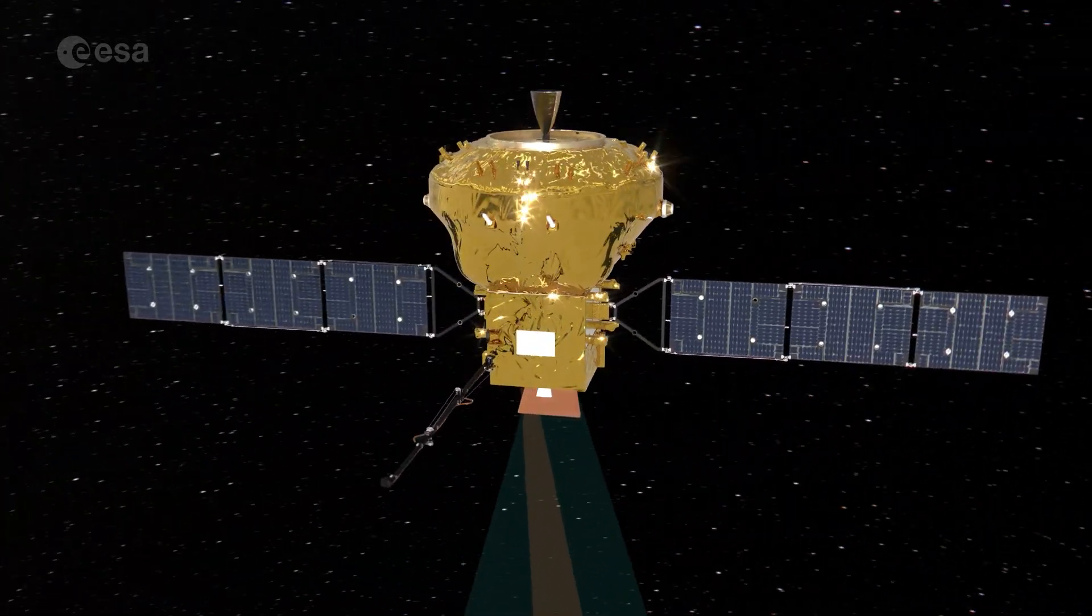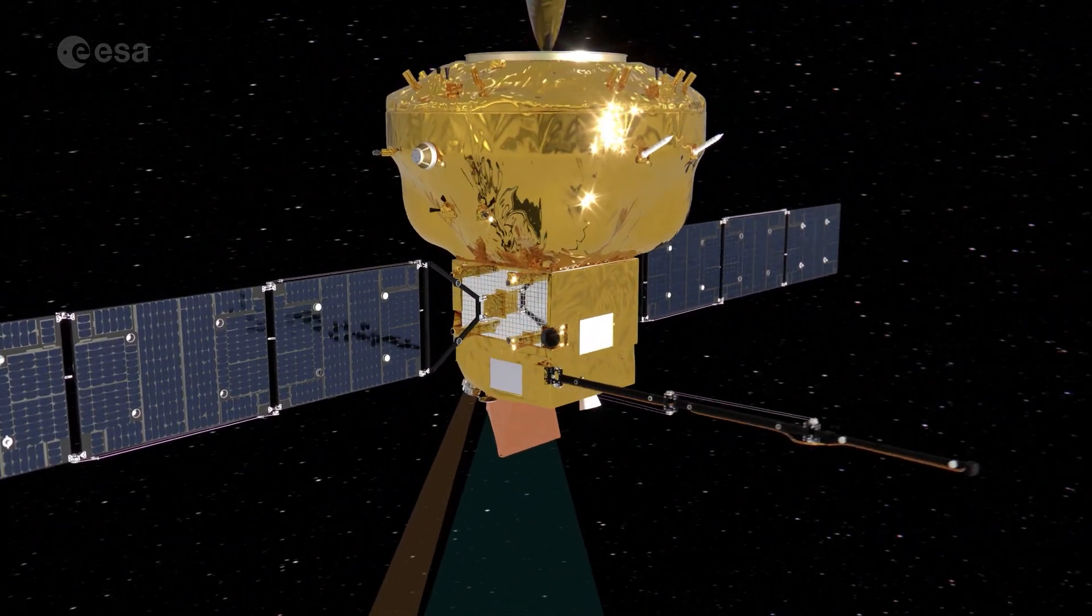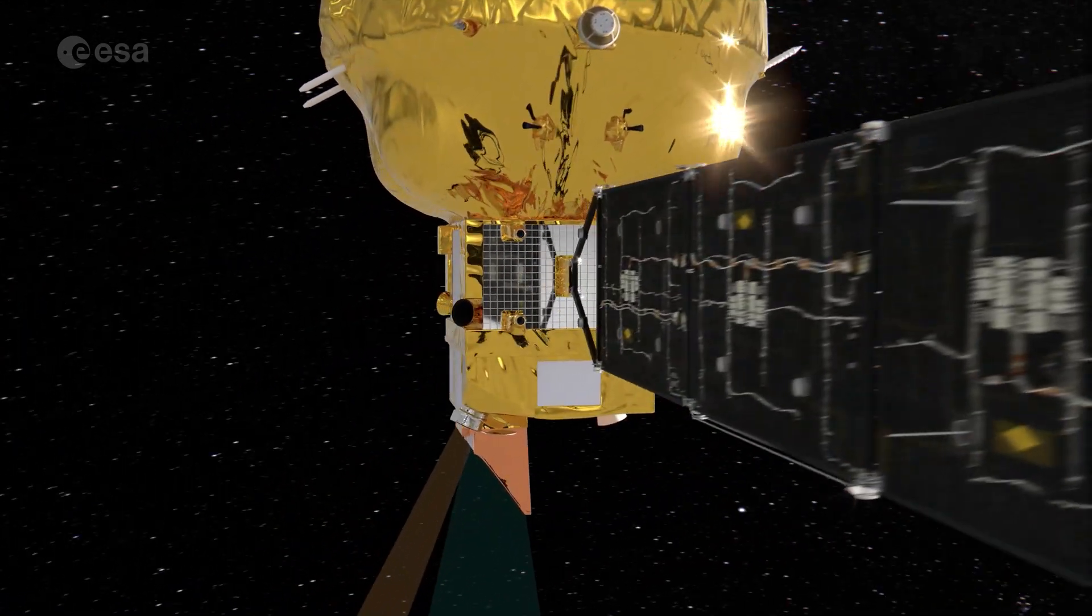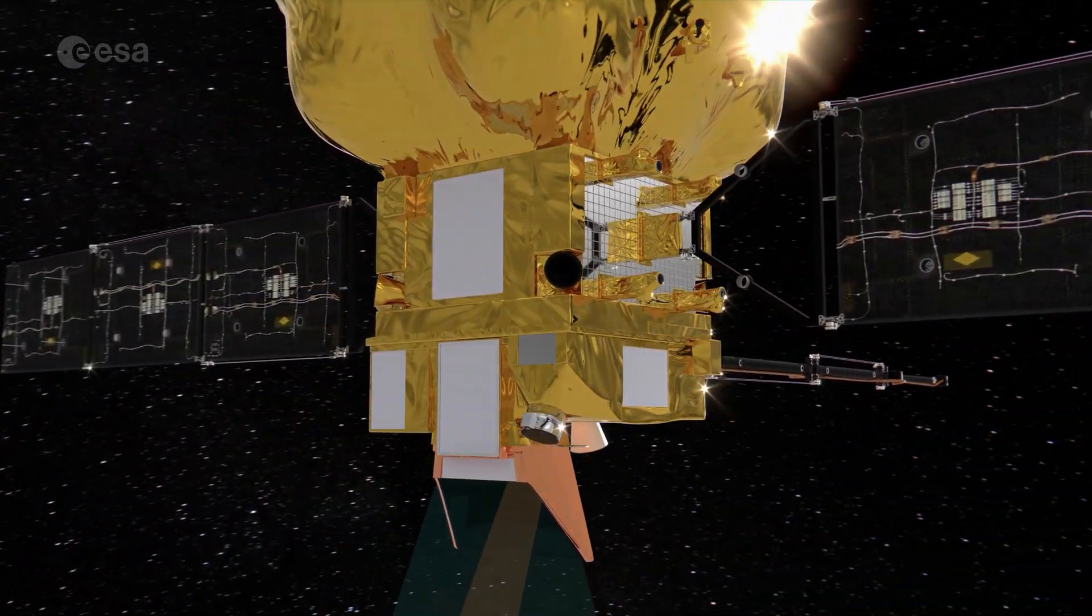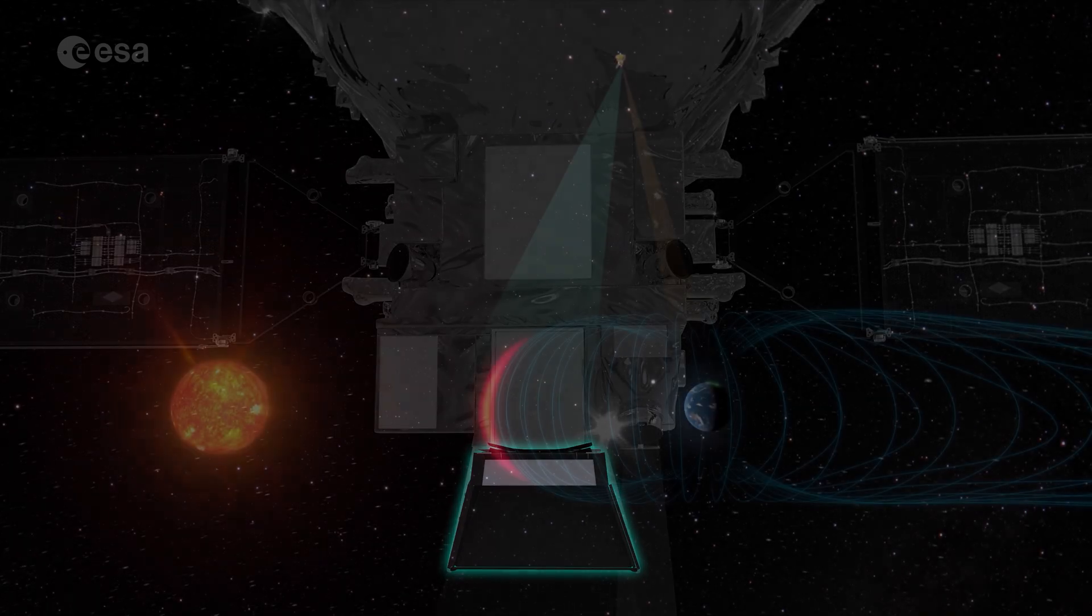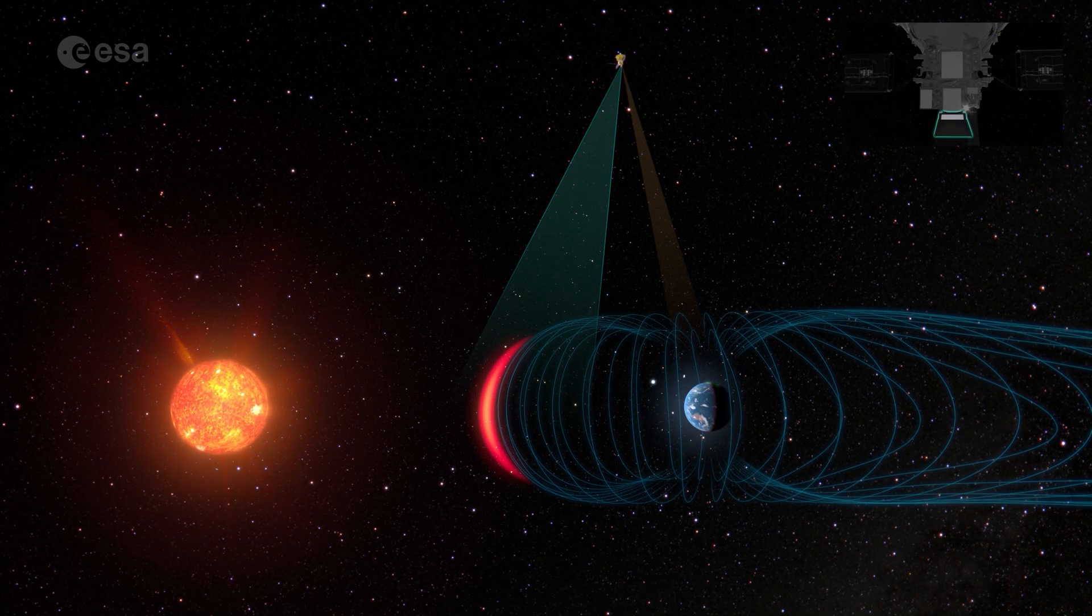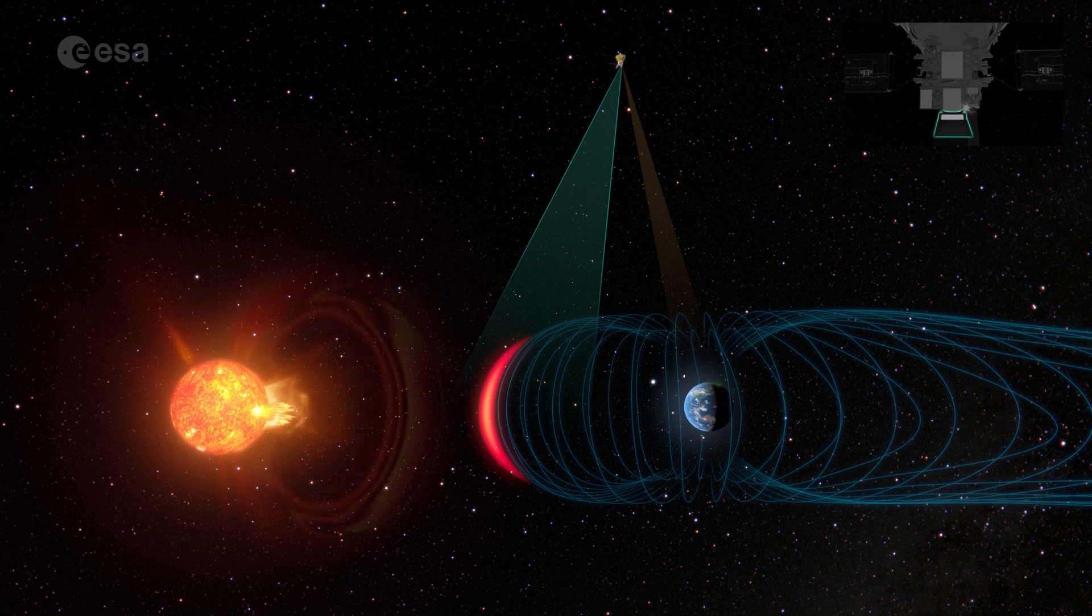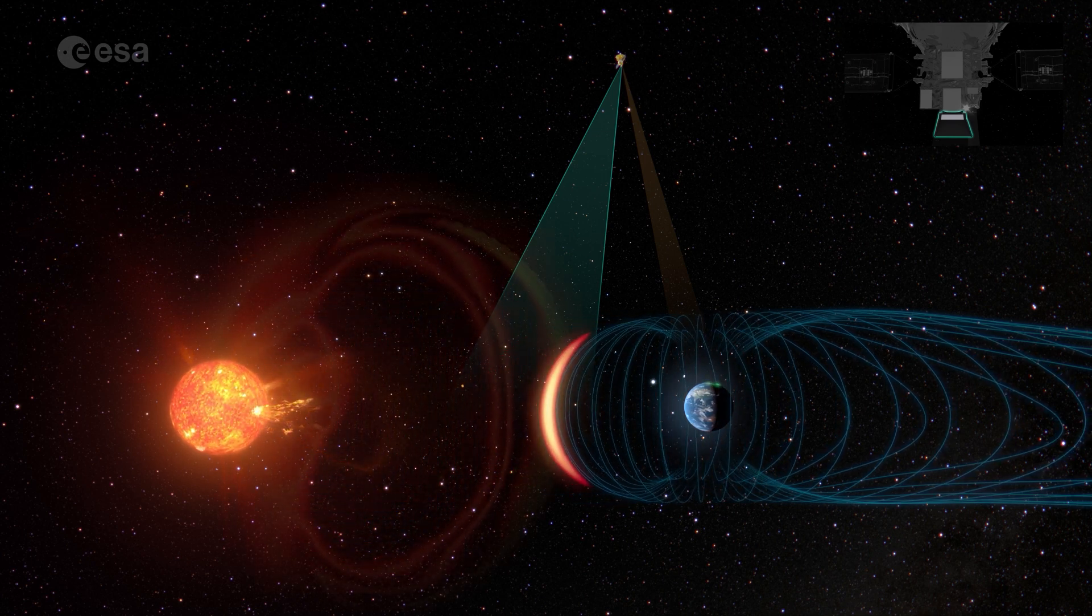SMILE is equipped with a unique toolkit to give us our first complete look at the interaction between the solar wind and Earth. It will be the first ever mission to look at the edge of Earth's magnetic field with X-ray vision to uncover where and how our shield is hit.